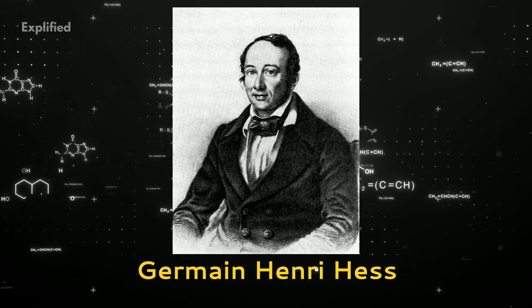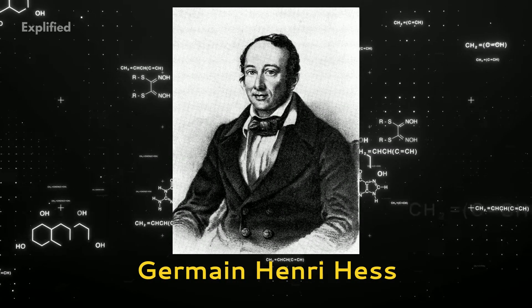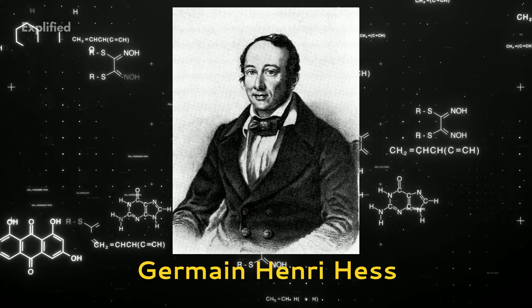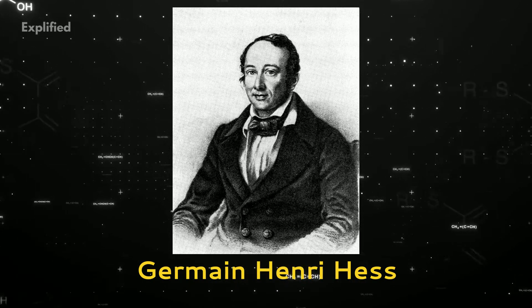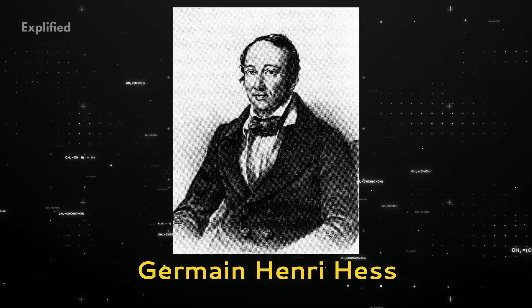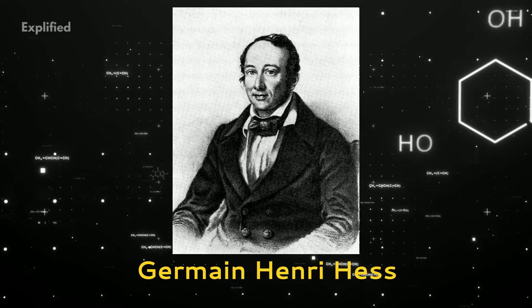Jermaine Henry Hesse was born in Geneva, Switzerland. In 1830, Hesse took up chemistry full-time, researching and teaching, and later became an adjunct professor of chemistry at the St. Petersburg Academy of Sciences.